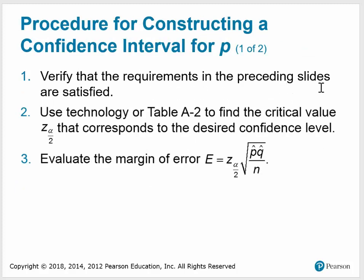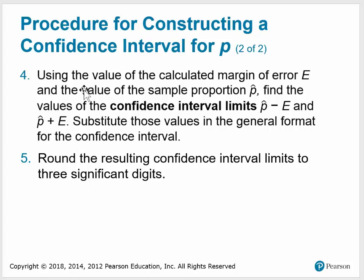We're going to verify that the requirements are satisfied. We're going to use table A2 to find the critical value that corresponds to the desired confidence level, and then find the margin of error. We'll then use the calculated margin of error E and the sample proportion P-hat to find the confidence interval limits — the difference and the sum. We substitute into the general format, then round the resulting confidence interval limits to three significant digits.